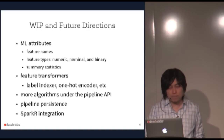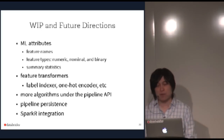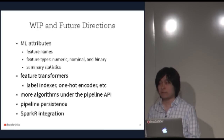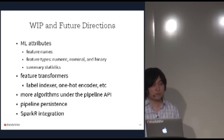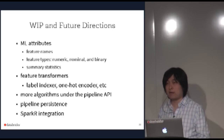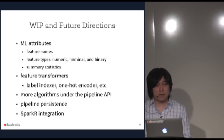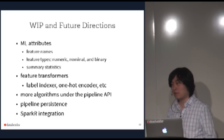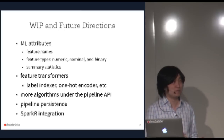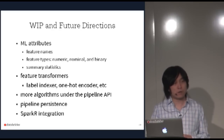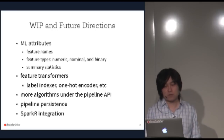There is work in progress — the pipeline API is not complete. We want to add feature attributes like names and category information, add more feature transformers such as one-hot encoding for categorical features, move more algorithms under the pipeline API, figure out how to persist pipelines to disk so you don't have to retrain after 10 hours, and provide the same pipeline API in Spark R, planned for version 1.4.